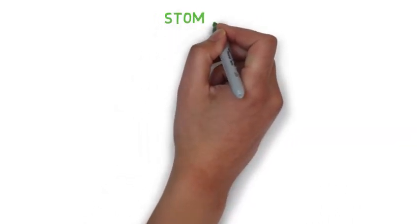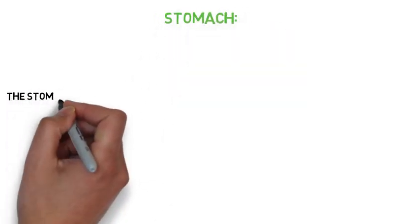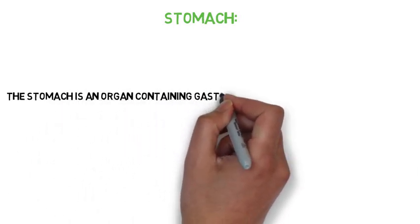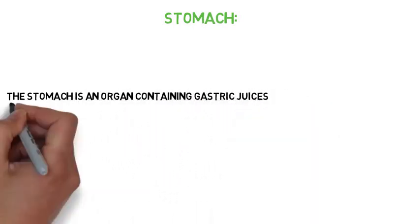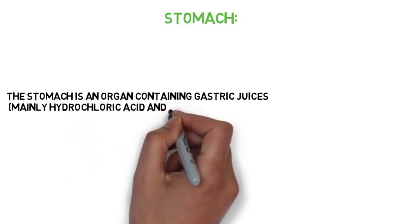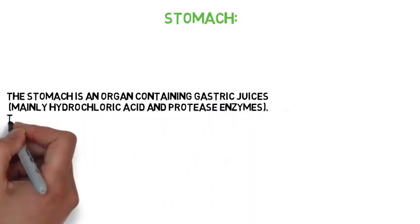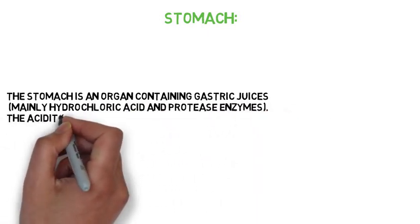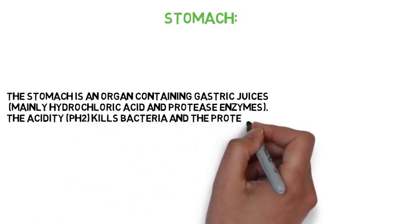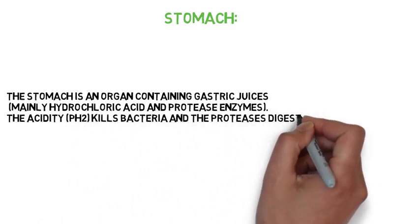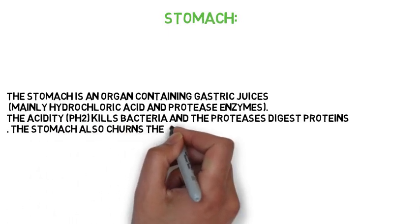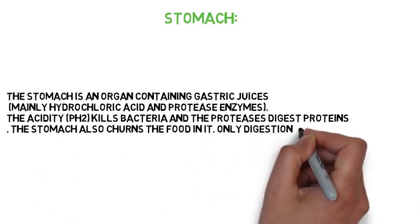Stomach. The stomach is an organ containing gastric juices, mainly hydrochloric acid and protease enzymes. The acidity, pH 2, kills bacteria and the proteases digest proteins. The stomach also churns the food in it. Only digestion occurs in the stomach.